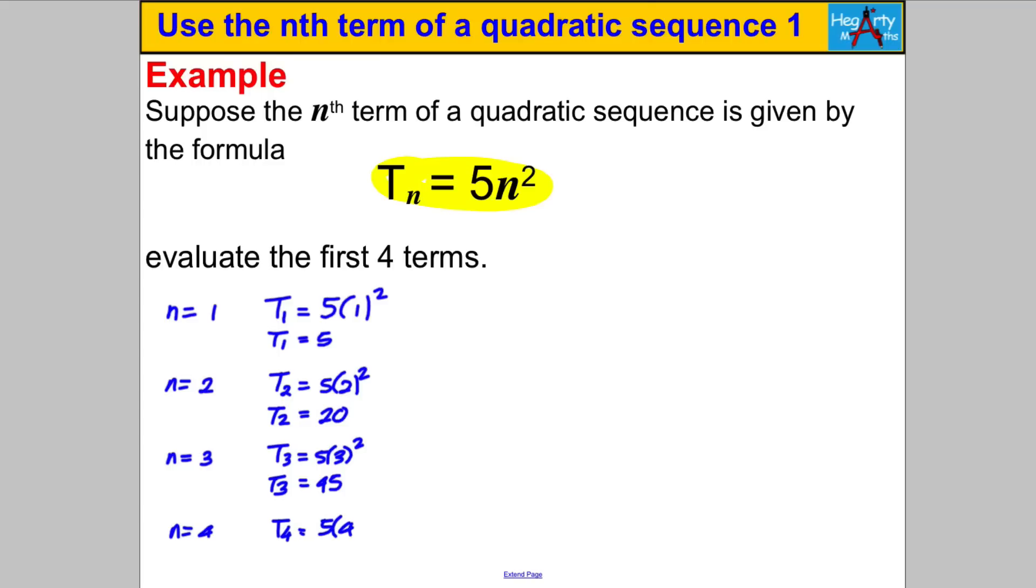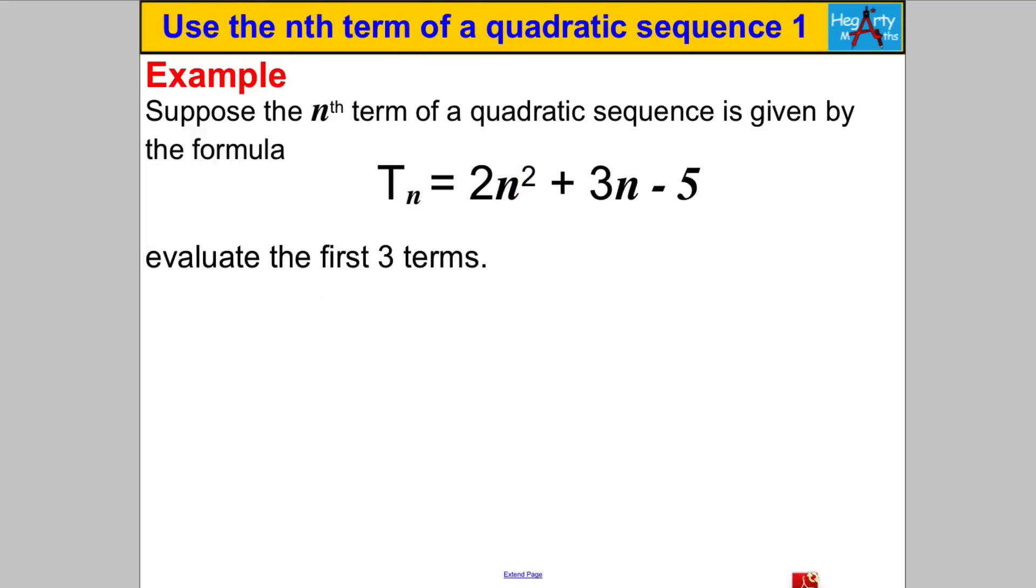And finally we're going to work out the fourth term as requested T_4 that's 5 times 4 squared. Now remember 4 squared is 16 and 5 times 16 is going to give us 80 so T_4 is equal to 80. They are the first four terms, first term second term third term fourth term and we're done. Let's have a go another one.